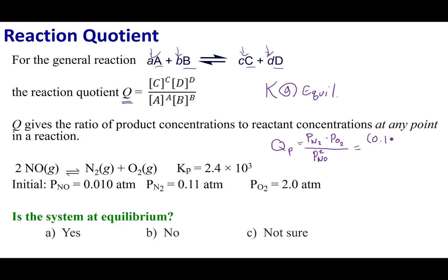So 0.1 squared, 2.0, and then on the bottom, I'm going to put 0.1 and square it. Now, if I evaluate this, this is 2,200, or 2.2 times 10 to the third.